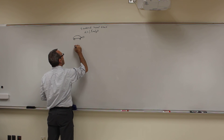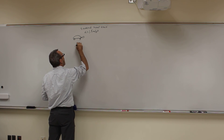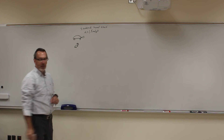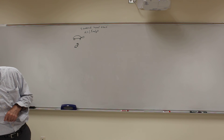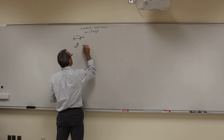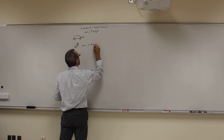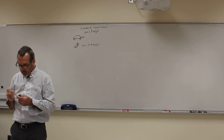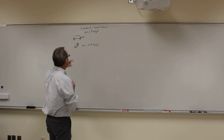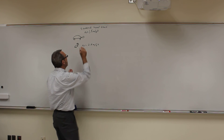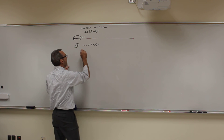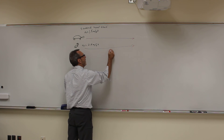Now the hare has an acceleration of 2.8 meters per second squared. How far will they travel before the hare catches up to the tortoise? So the tortoise is going to take off first, get a 5 second head start, and then the hare is going to take off, and we want to know the distance until they catch up.